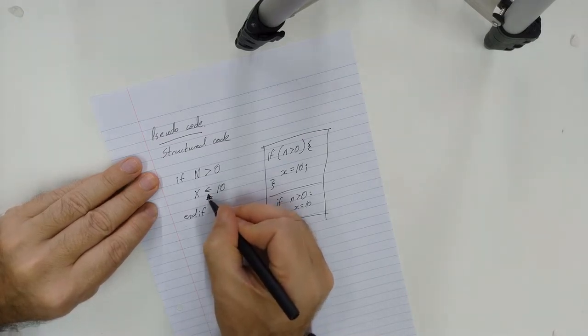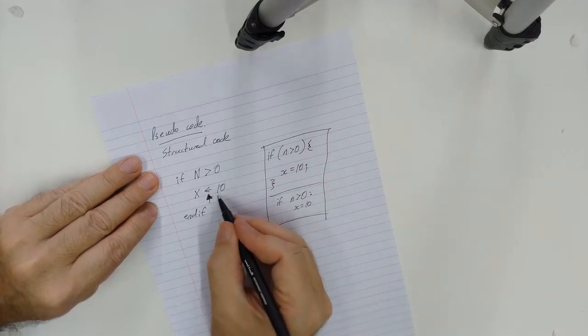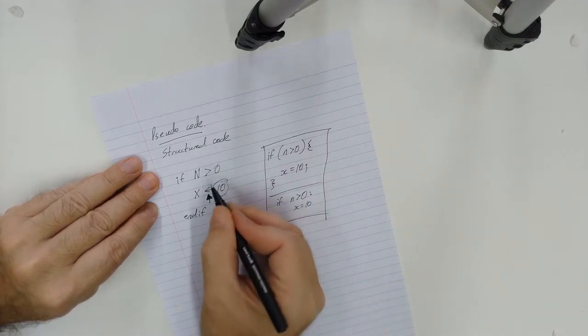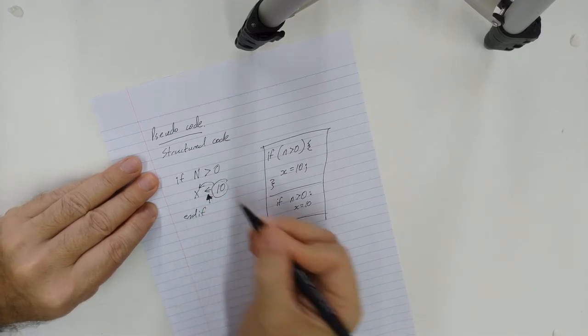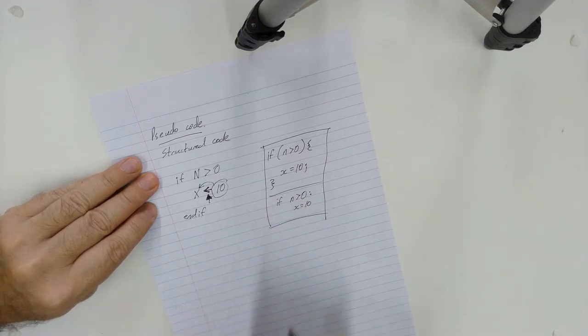For an assignment operator in pseudocode, just to make clear that I am taking the value of 10 and putting it into X. The idea of using an arrow to indicate that, instead of just using the equal sign, is quite commonly used in pseudocode.